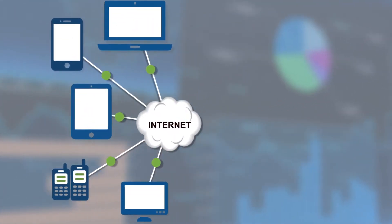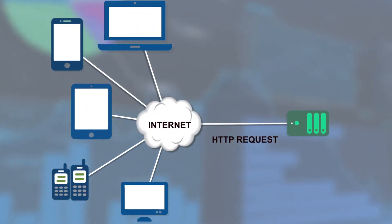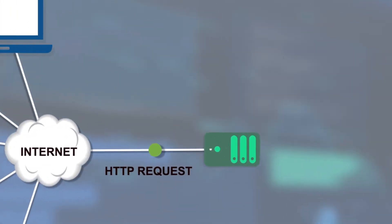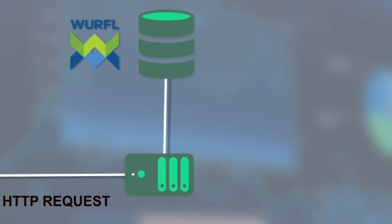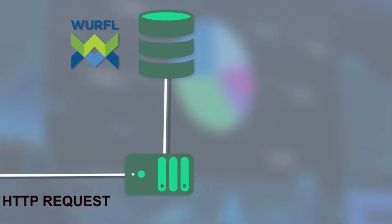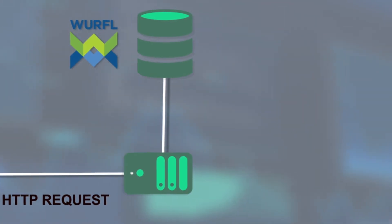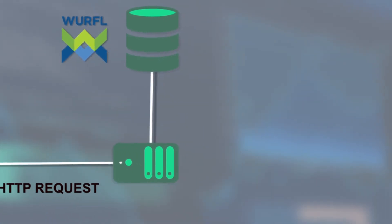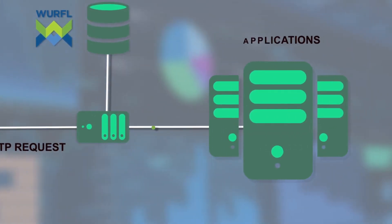How do we do it? When a user visits your website, our API intercepts HTTP requests and compares its user agent against our extensive catalog of over 40,000 devices. From there, the API returns an accurate description of the device being used and any important attributes.